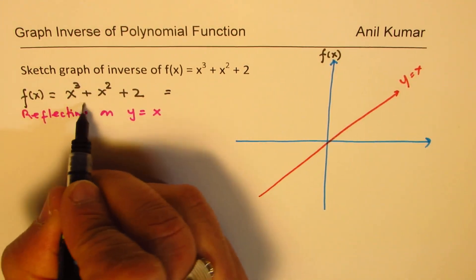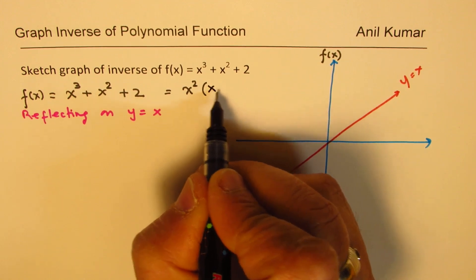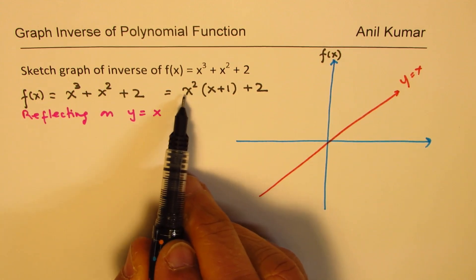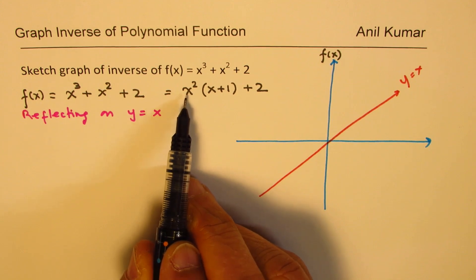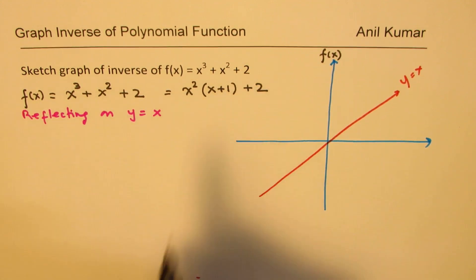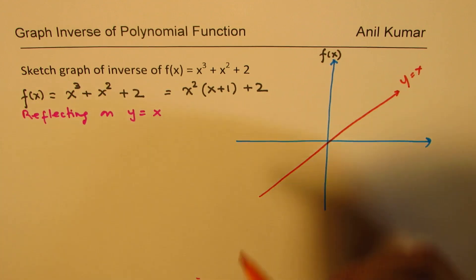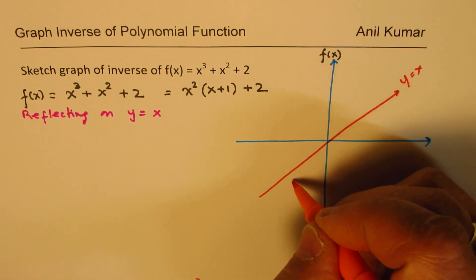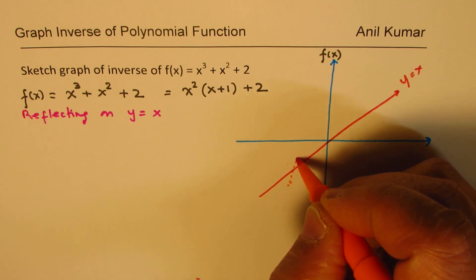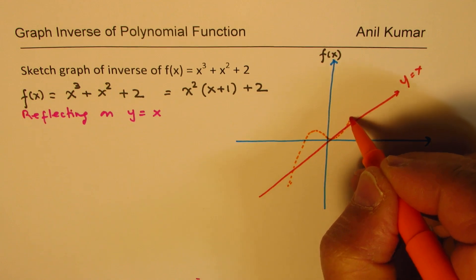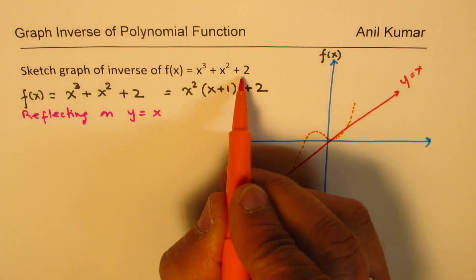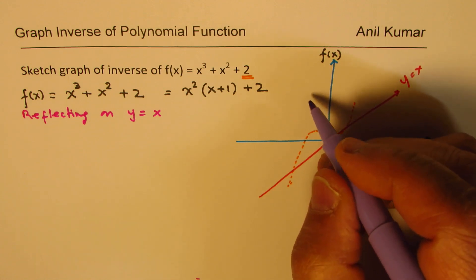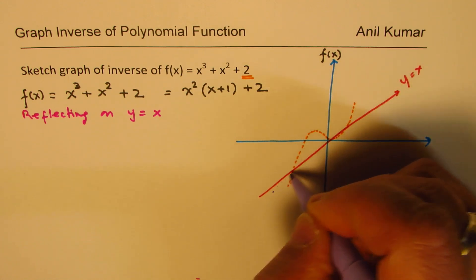You can see this equation could be written as x²(x + 1) + 2, so we do have a cubic equation which has zeros at 0 and minus 1, translated 2 units up. So basically we're looking at a function which crosses like this, a curve that has been translated 2 units up. Let me sketch this function which has been translated 2 units up — it will look something like this.